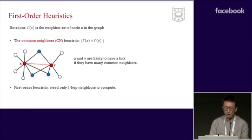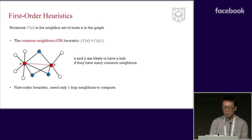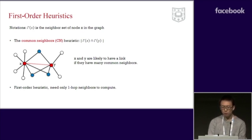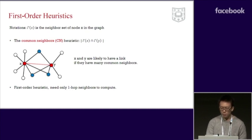I will use Γ(x) to denote the neighbor set of node x in the graph. The first one, called common neighbors, predicts links by counting how many common neighbors x and y share. It is widely used in social network friend recommendation. The common neighbors heuristic is a first-order heuristic because we only need to know the one-hop neighbors of x and y to compute the score.